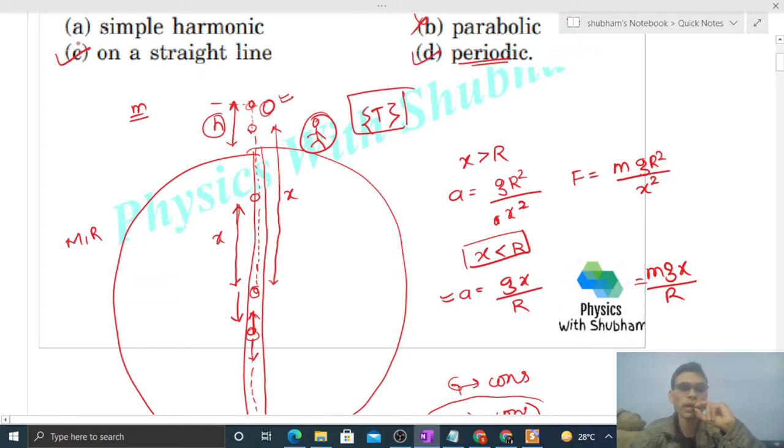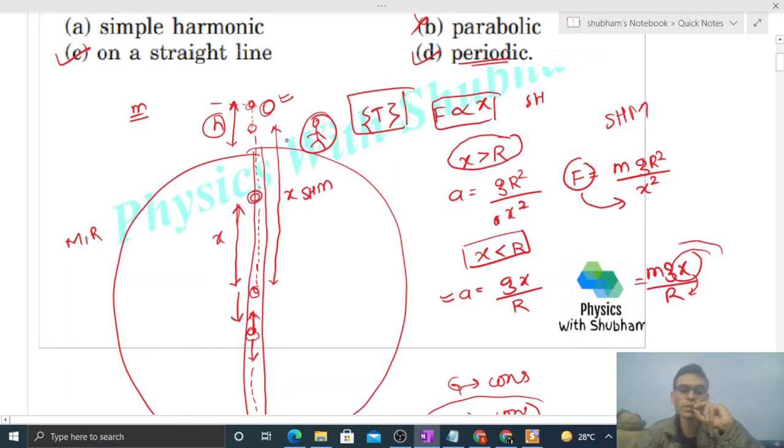Is it simple harmonic motion? Check the force. Force should be directly proportional to x for SHM. Now when x is greater than capital R, the force is inversely proportional to x squared. That's why it is not SHM. Otherwise, when the particle is inside the Earth, the force is directly proportional to x, so inside the Earth it does SHM, but outside it will not do SHM.